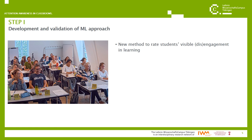Therefore, we developed a new method to rate students' visible disengagement in learning manually, and we did this by defining visible indicators in steps of seconds, to provide as many data points as possible that could serve as the ground truth for the automated analysis later.